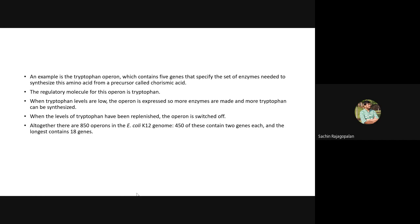The tryptophan operon, also called the trp operon, consists of five different genes coding for enzymes required for synthesis of tryptophan — an amino acid synthesized from chorismic acid. Converting chorismic acid to tryptophan has five steps requiring five different enzymes. If there is enough tryptophan inside the cell, tryptophan itself will block this operon from expressing itself, making it a repressible operon. When tryptophan levels are low, the operon is expressed; when levels are high, the operon is switched off.